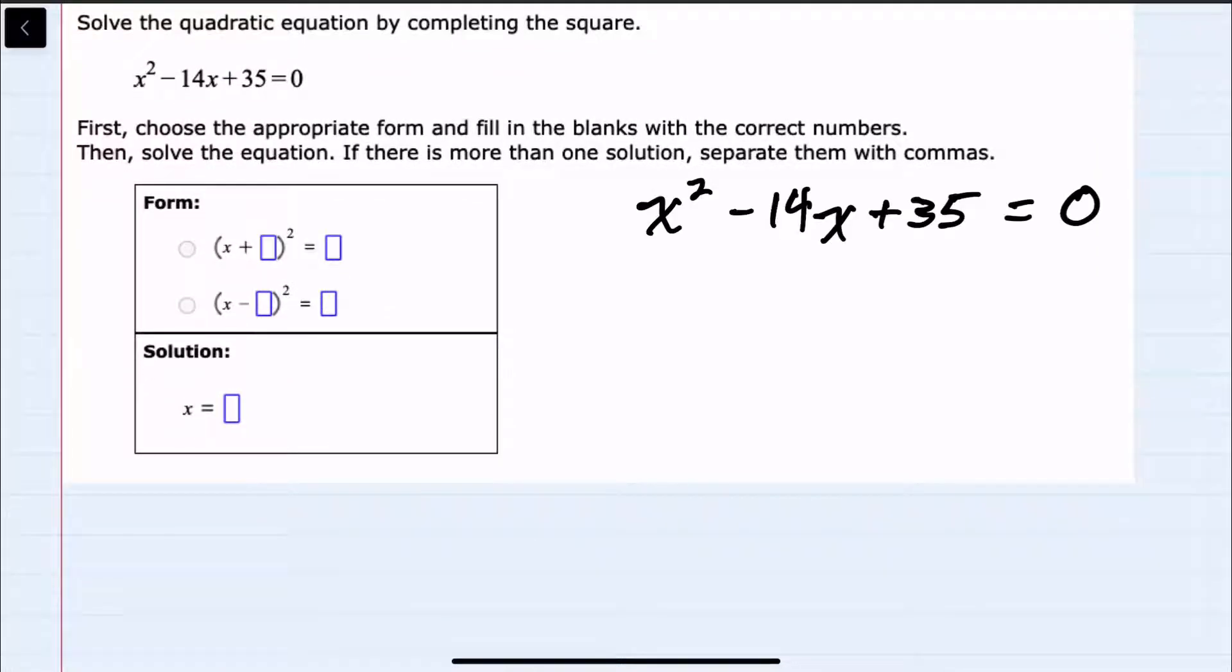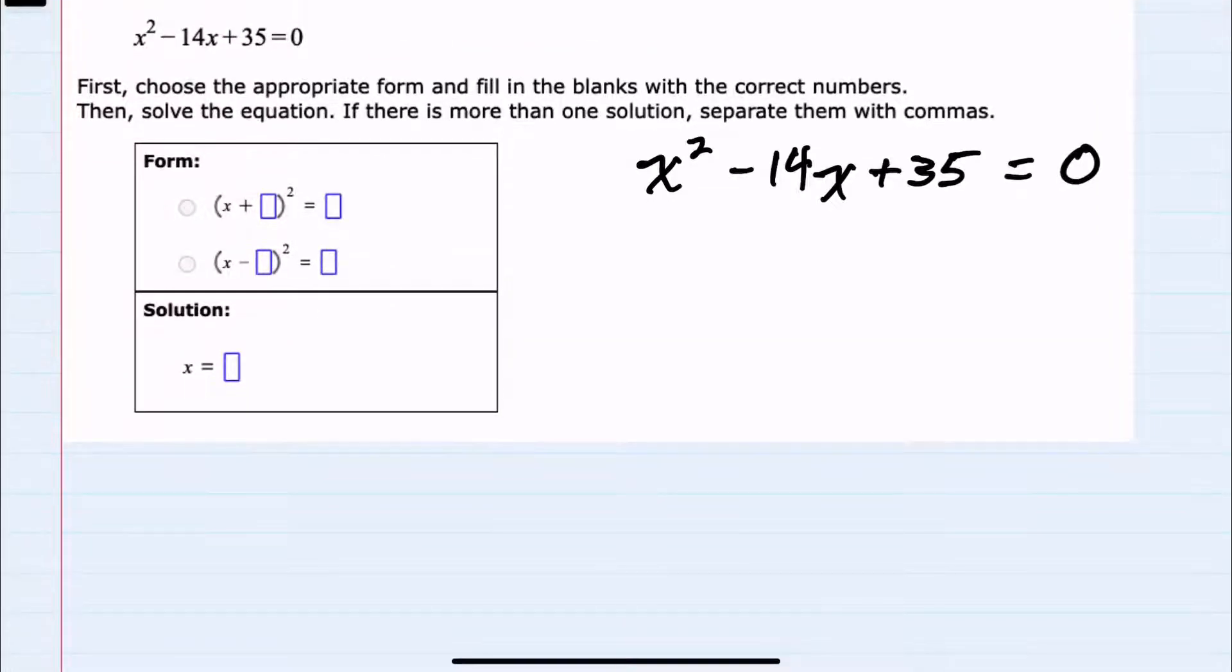And to complete the square, the first step is to take the constant term of the quadratic on the left-hand side and move that over to the other side of the equation. Canceling on the left, I now have x² - 14x = -35.